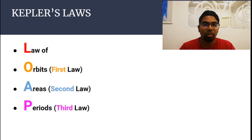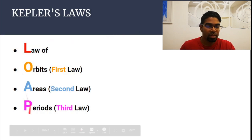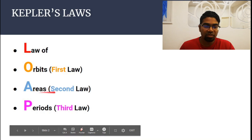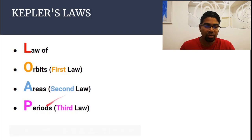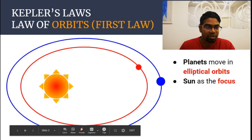I've come up with a simple way to remember Kepler's laws. Instead of SOAP, it's LOAP, L-O-A-P. So that's law of orbits, which is the first law, law of areas, the second law, and law of periods, the third law. Let's get into the first law.